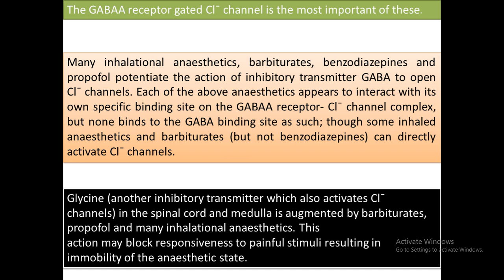Each anesthetic agent interacts with its own specific binding site of the GABA receptor and chloride channel complex. Within GABA receptors, different drugs bind to different positions and are responsible for opening the chloride channel. Some inhaled anesthetics and barbiturates (but not benzodiazepines) can directly activate the chloride channel. Glycine, another inhibitory neurotransmitter which activates chloride channels in the spinal cord and medulla, is augmented by barbiturates, propofol, and many inhalation anesthetics.